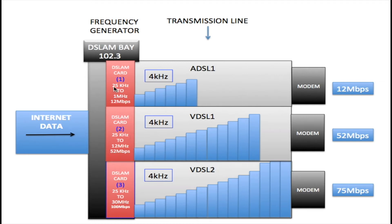Each one of these lines has different frequencies. ADSL1 has frequencies between 25 kilohertz and 1 megahertz, and it has a top speed of 12 megabits per second. VDSL1 goes from 25 kilohertz right up to 12 megahertz, and it has a top speed of 52 megabits per second. VDSL2 goes from 25 kilohertz to 30 megahertz, and it has a top speed of 100 megabits per second.